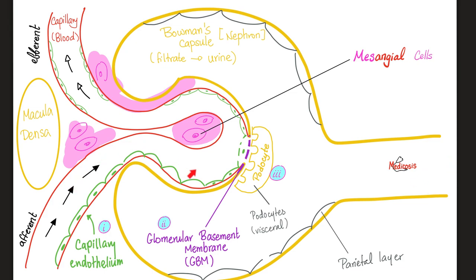Here is a blood vessel lined by endothelium, then the glomerular basement membrane, followed by the epithelium — which we call the podocyte, because it has feet. In French, 'lupier' means feet.